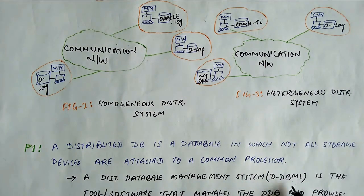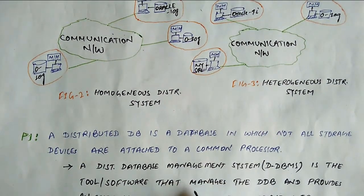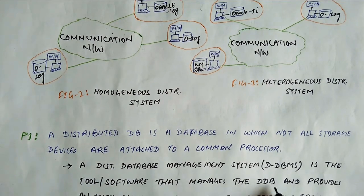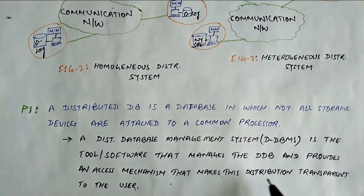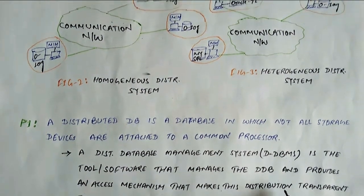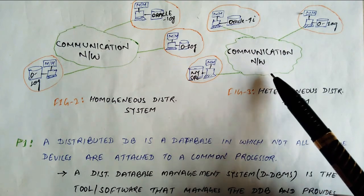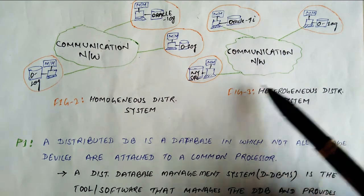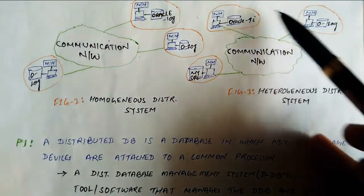What is the DDBMS? A Distributed Database Management System is the tool or software that manages the distributed database and provides an access mechanism that makes this distribution transparent to the user. Multiple sites are connected with the communication network, but what the user will feel is transparency — it will appear as a single system.